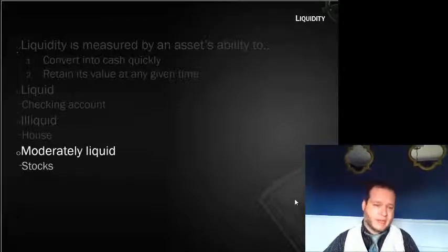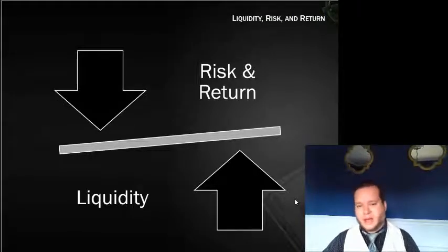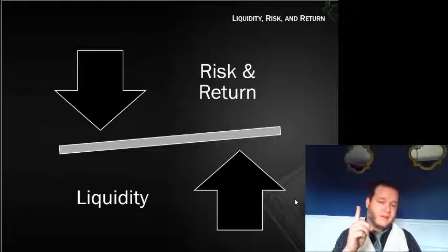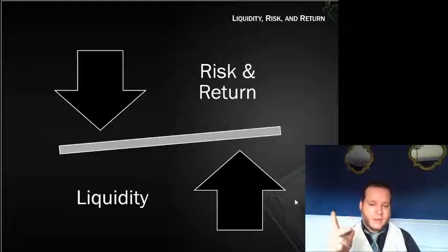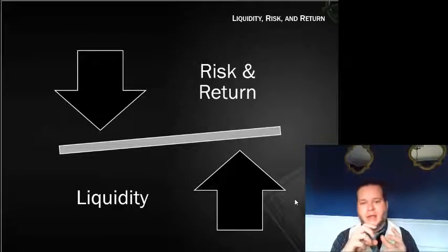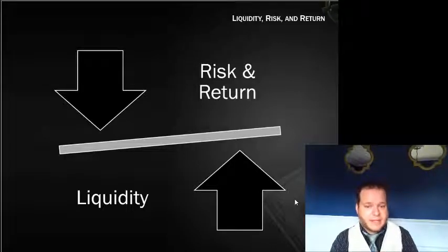Stocks are kind of in between — most stocks can be sold very quickly, but whether you can sell for what you paid is iffy; sometimes it's up, sometimes down. So stocks are moderately liquid. The more liquidity you have, the less return you'll get. Your checking account pays maybe half a percent or one percent — very little — because it has high liquidity and very low risk. The purpose of your checking account is to be there for transactions, not to give you a high rate of return.